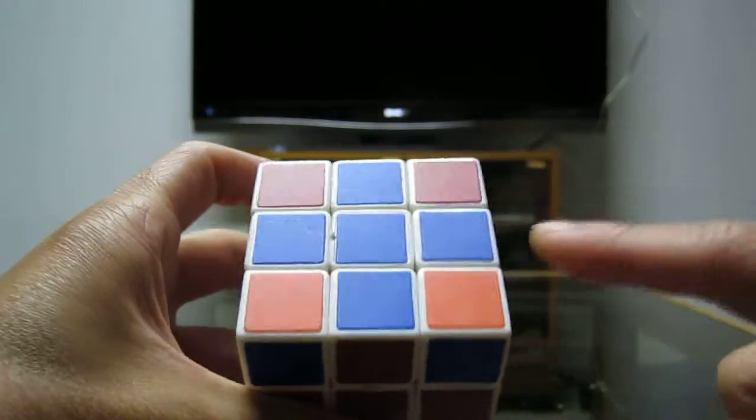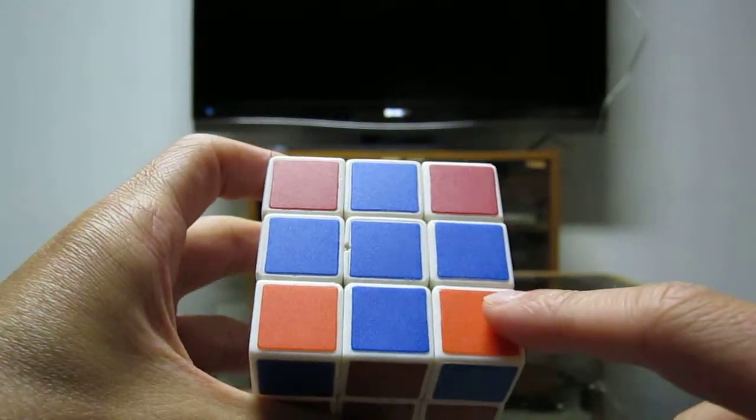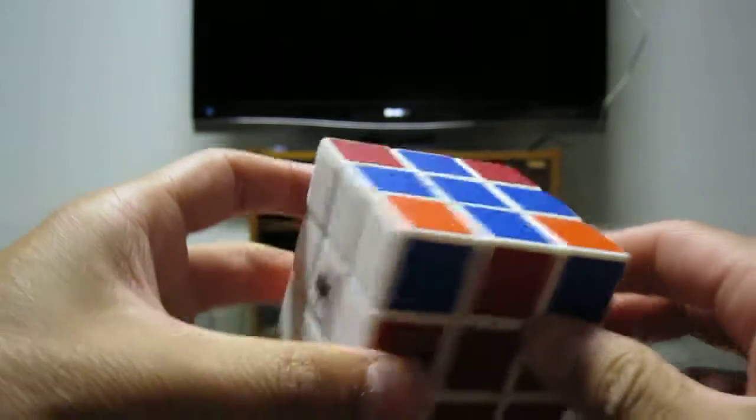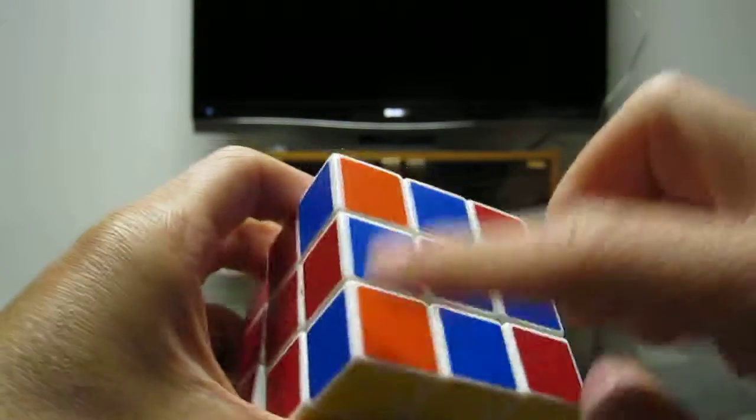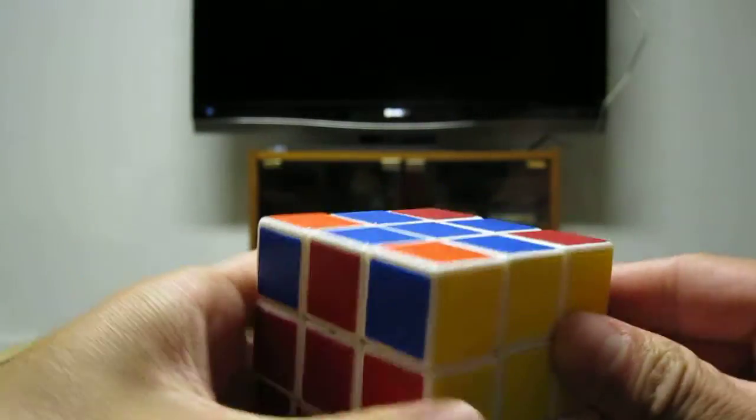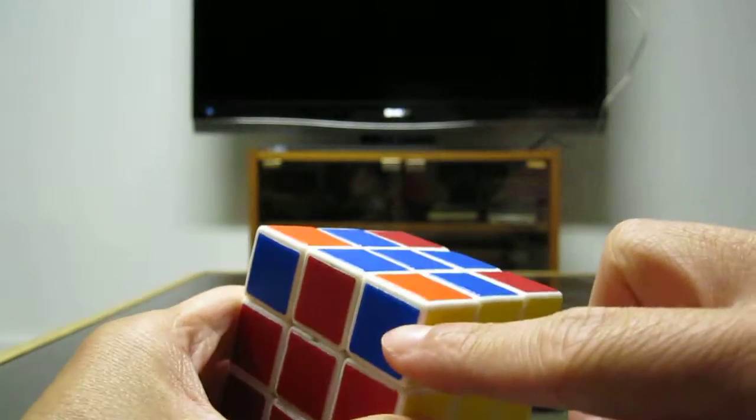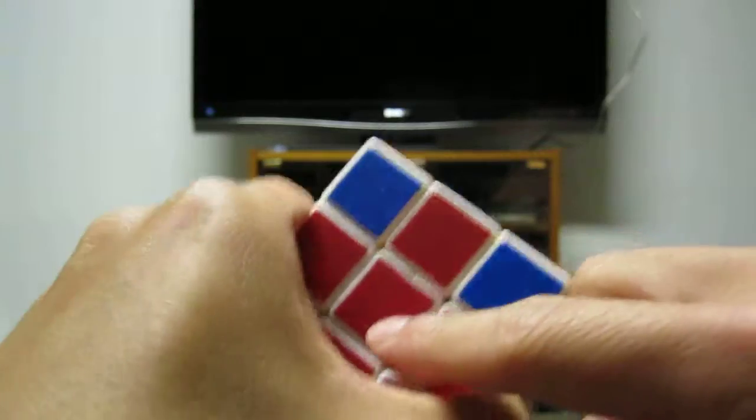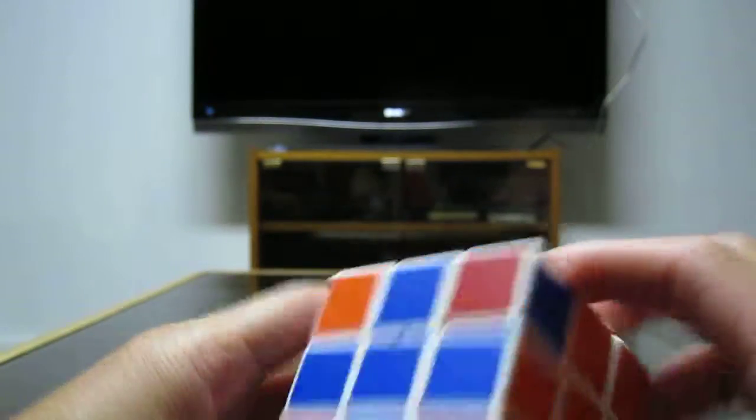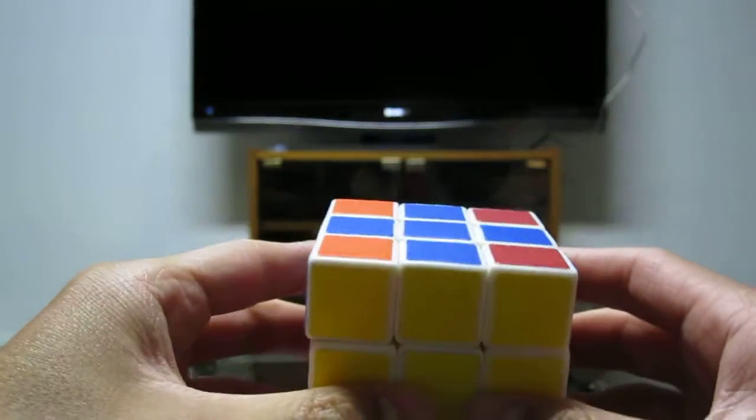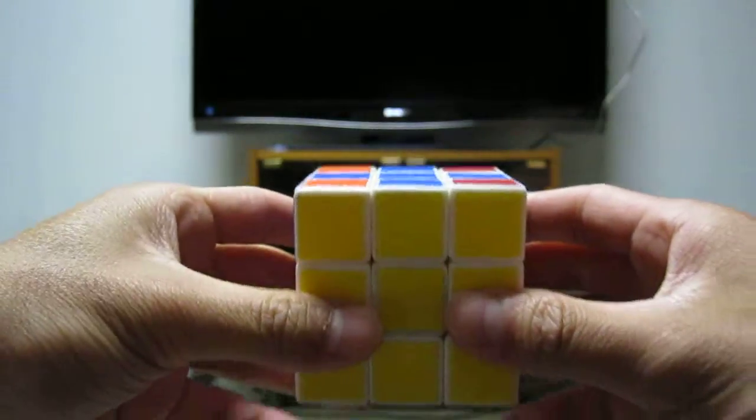To get the corners, you have to have at least one matching corner in its right spot already. So, looking at this cube, none of these corners are in its right spot, because this corner only has blue matching, because red and orange doesn't match, and all the others are the same. So, to get one corner match, you do this algorithm.